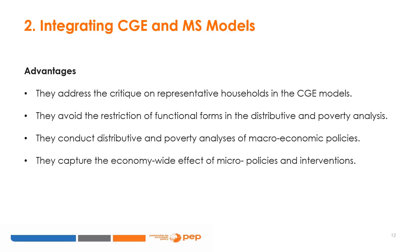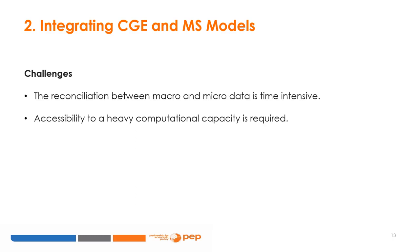There are multiple advantages of integrating individual households from a nationally representative survey into a CGE model. They address the critique on representative households in the CGE models, avoid the restriction of functional forms in the distributive and poverty analysis, conduct distributive and poverty analysis of macroeconomic policies, and capture the economy-wide effect of micro policies and interventions. The main challenges are that the reconciliation between macro and micro data is time intensive, and that accessibility to heavy computational capacity is required because the number of equations increases quickly with the number of households.